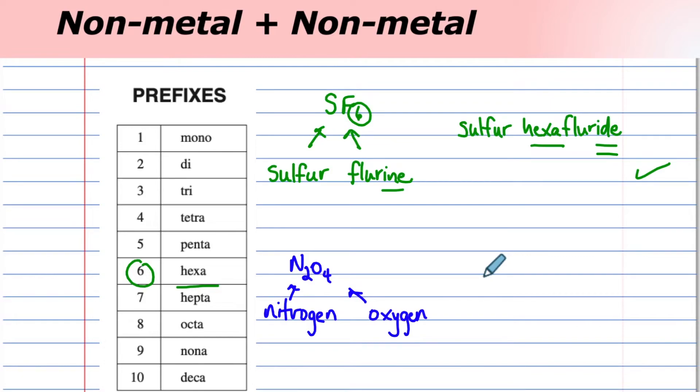Will result in... Let me get rid of the 6 here. The 2 matches with di, so it would be dinitrogen. And the 4 matches with tetra. Tetraoxide.